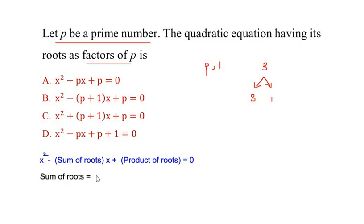Now sum of roots is given as p + 1 because here we have considered the roots as factors of p, so we had p and 1. And the product of roots is given as p × 1, so that is going to give us p.